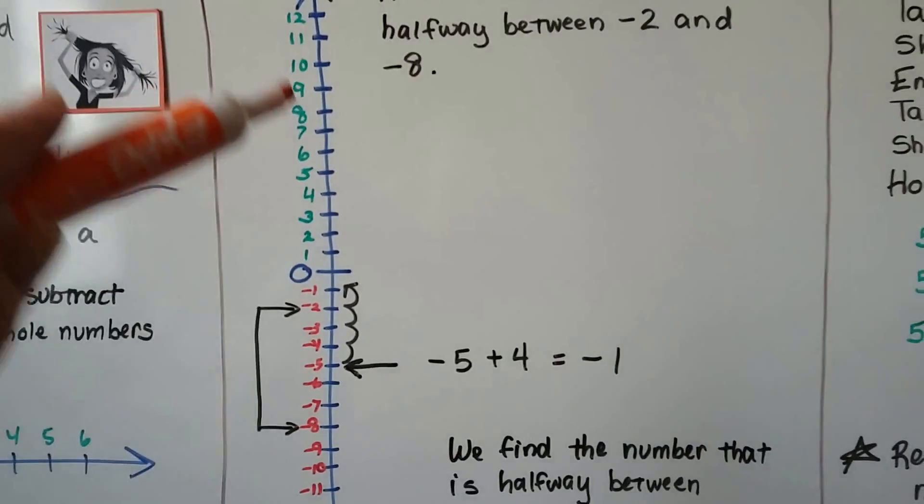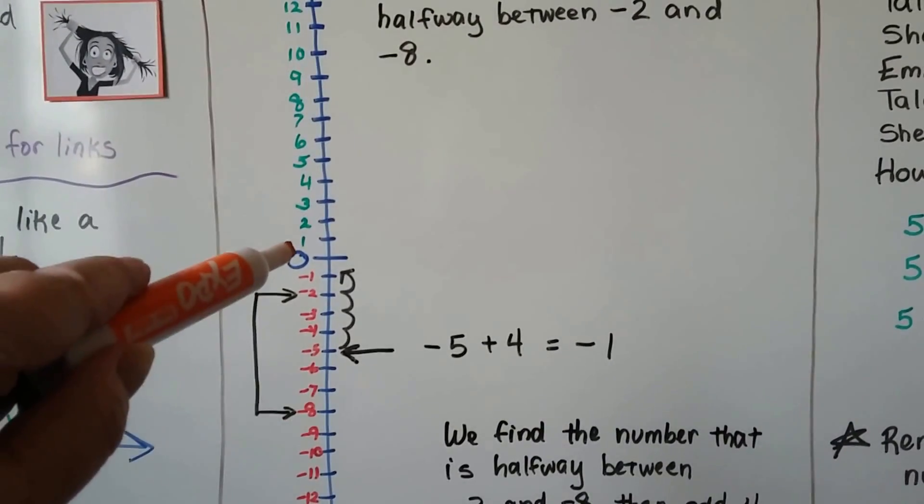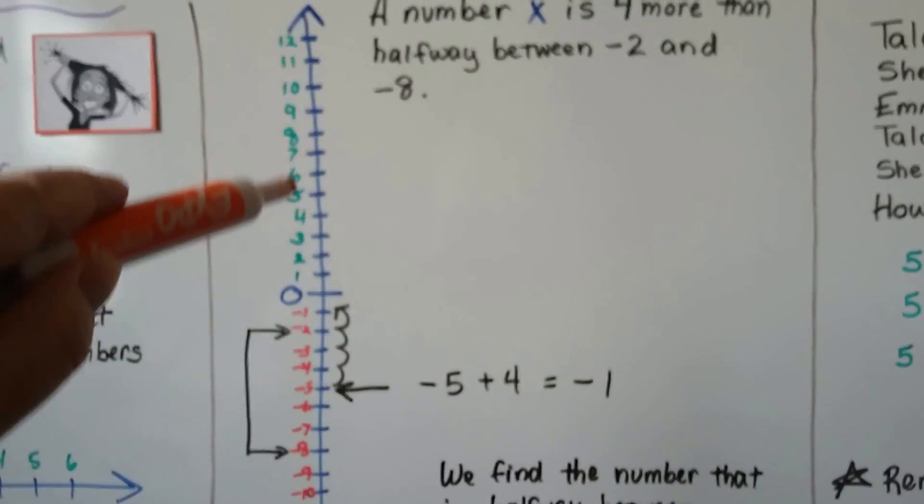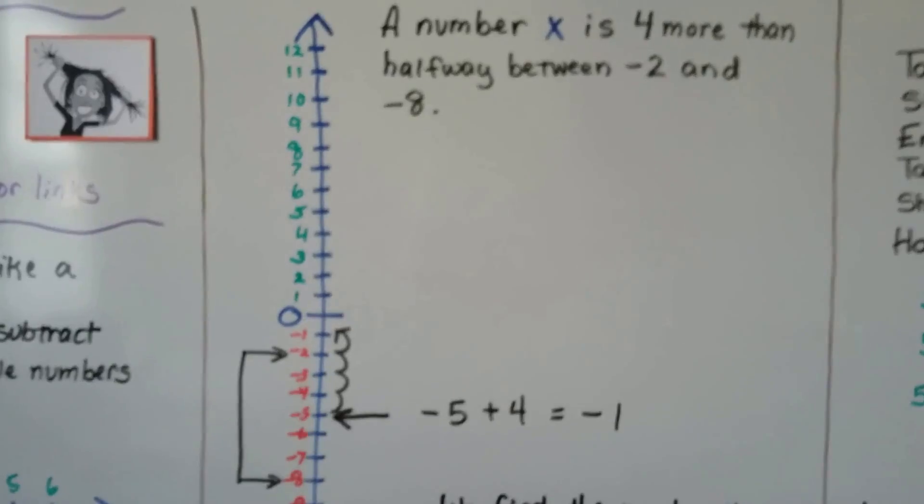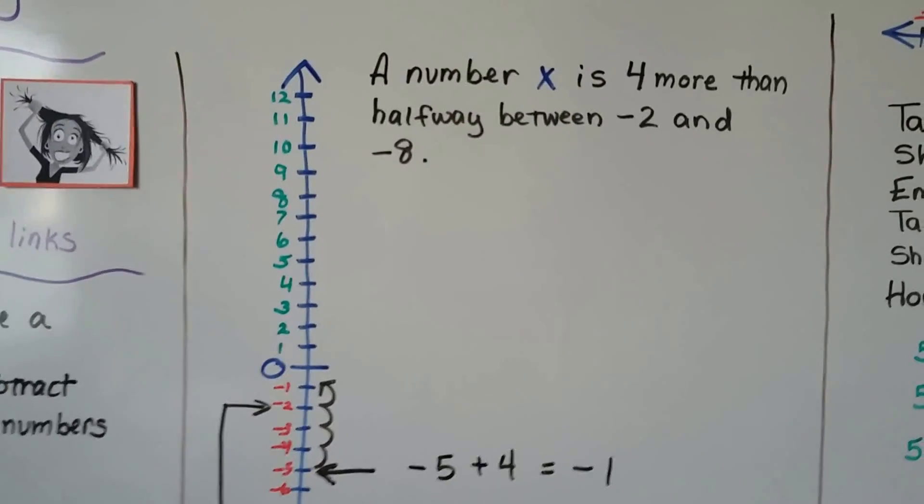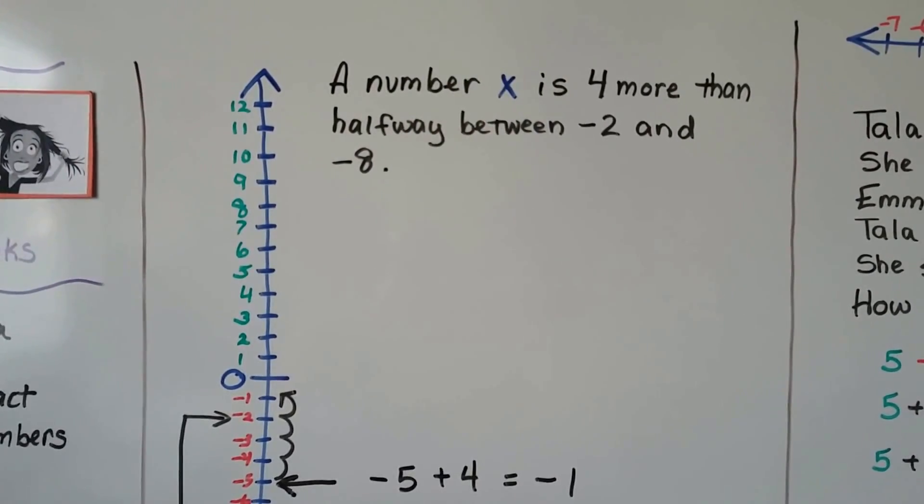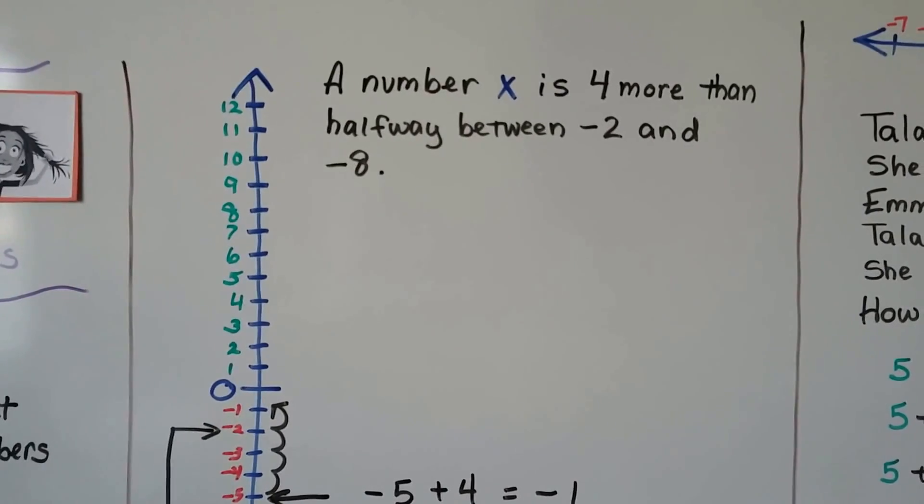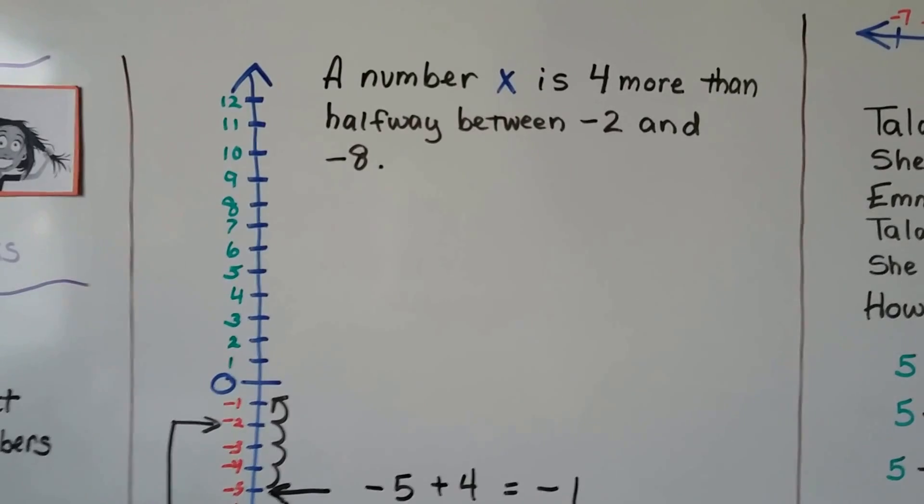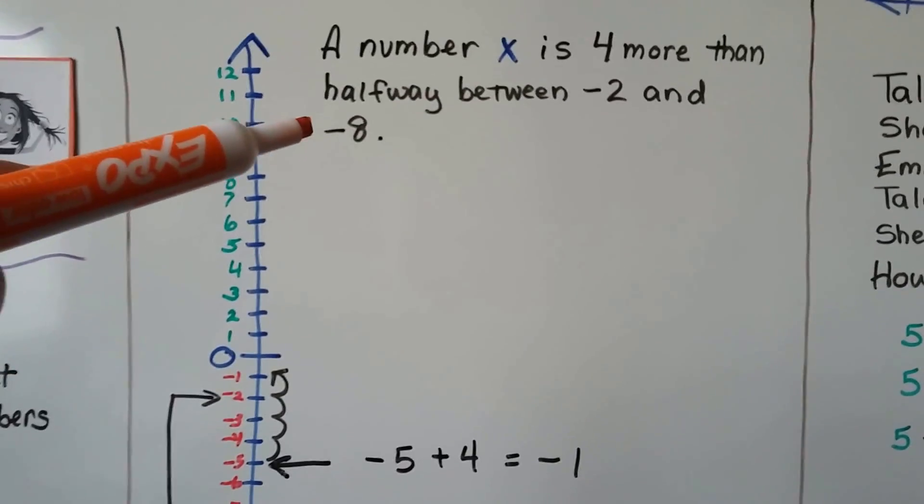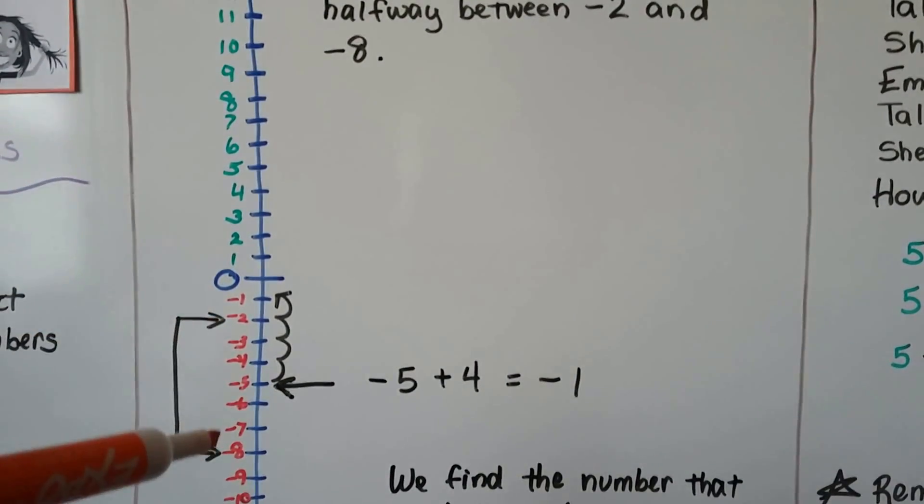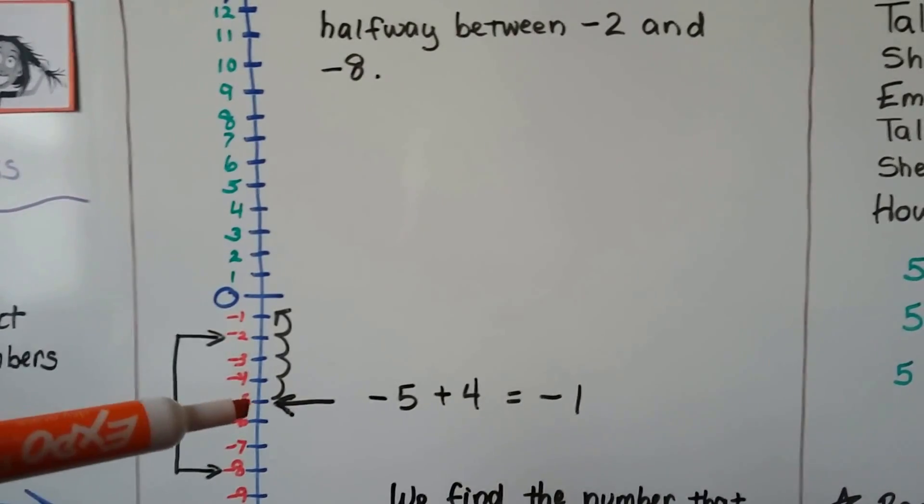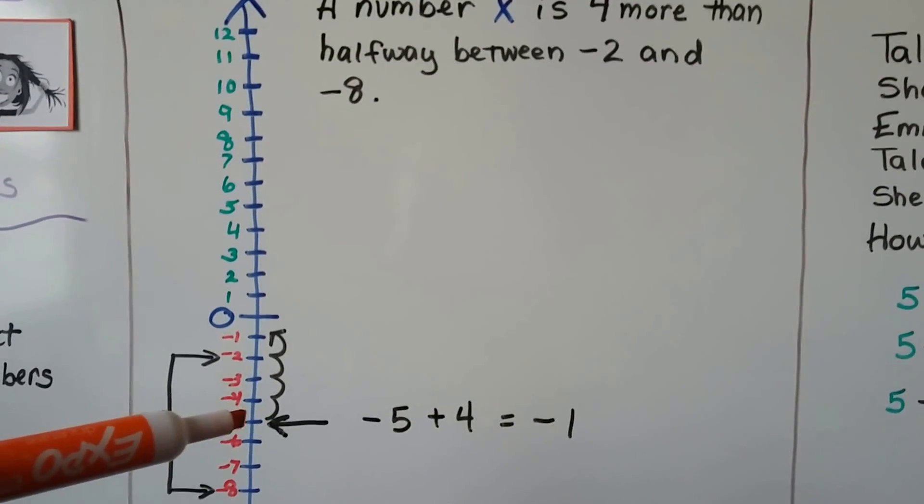So here's one that's vertical. It's going up and down. You can see here's 0 and the red ones are the negative numbers and above 0 the green ones are the positive numbers. And it says the number x is 4 more than halfway between negative 2 and negative 8. So we need to find out what x is. We need to solve for x. We know it's 4 more than whatever this halfway mark is. So we find negative 2 and negative 8 and we find the number that's halfway between them. Well, that's a negative 5.